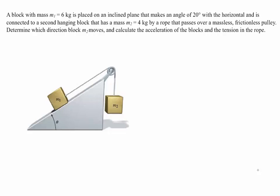This example problem is going to put together the ideas from both connected objects and inclined planes. We have one block M1 with a mass of 6 kg placed on an incline that makes an angle of 20 degrees with the horizontal. There's a second block M2 with a mass of 4 kg connected to it by a rope that passes over a massless frictionless pulley. We need to figure out what direction M2 moves, find the acceleration of the blocks, and find the tension in the rope.